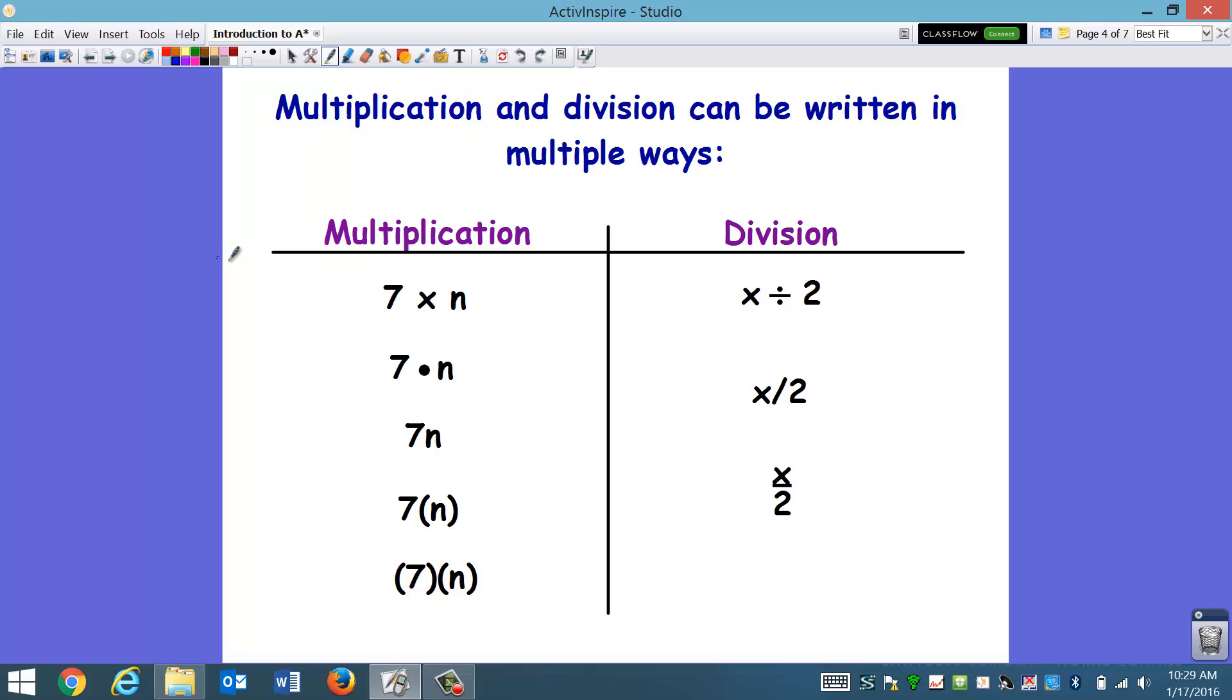While we're talking about operations, let's go ahead and pause to think about the way we write multiplication and division. We have talked about this already in class, but I just wanted to revisit it. For multiplication, we're so used to using x as our multiplication symbol, but now working with variables, we know that x is a popular variable. So instead of using x, we can use a dot to represent multiplication.